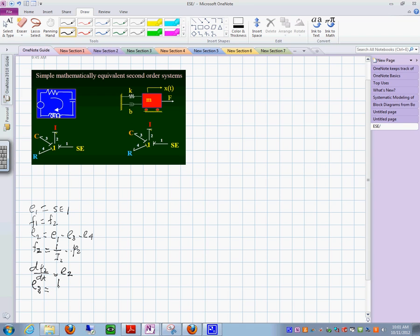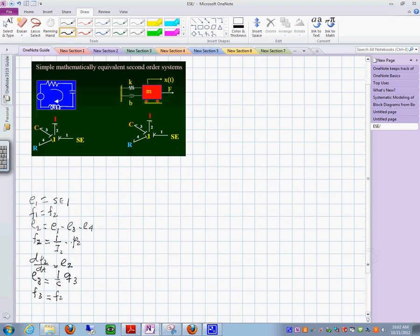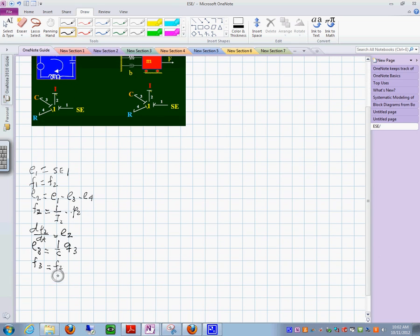Do you see what I mean? I'm putting the efforts and the flows of each one of those. This is 1 over C times Q sub 3, the integral form of that C. F sub 3 is also F sub 2 for the very same reasons that we explained before that F2 sets the flow for all the others. But also that dQ sub 3 dt is equal to F sub 3.